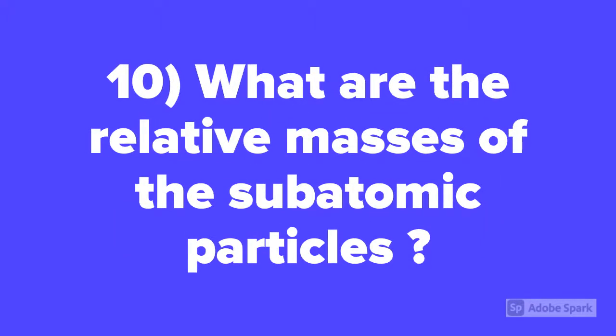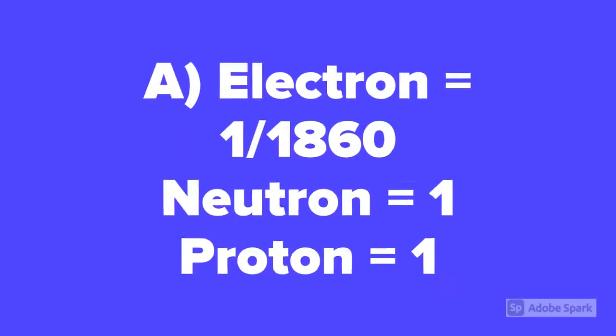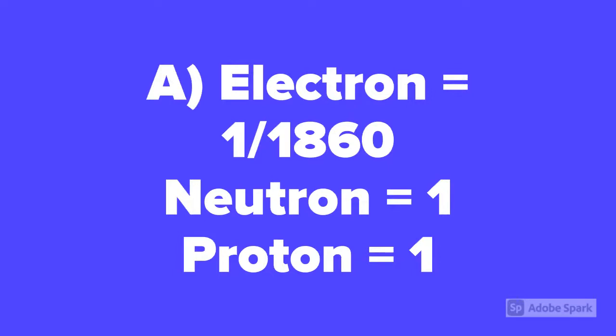Question number 10. What are the relative masses of the subatomic particles? Electrons have a mass of 1/1860. Neutrons have a mass of 1, and protons also have a mass of 1.